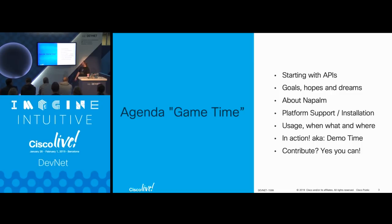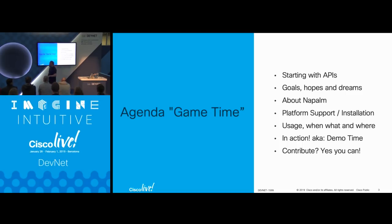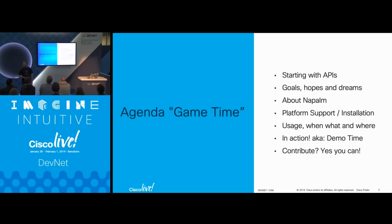Let's talk about the agenda today. I'm going to start with APIs — one of the questions I get asked a lot is how and why did you start using APIs, and why did you stop with the command line and move to automation? Next we'll go into goals, hopes, and dreams around learning network automation. Then we'll move into NAPALM — why I chose it, the platform installation and support, usage, and we'll see it in action with a demo. Every single one of you can contribute to it, which is one of the reasons I love the open source community.